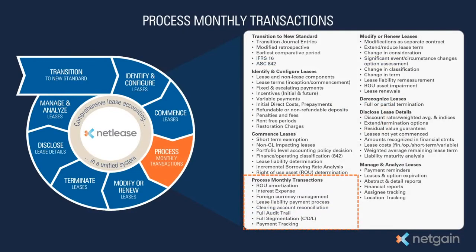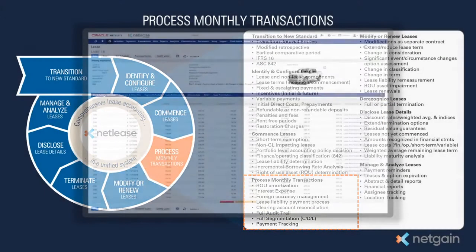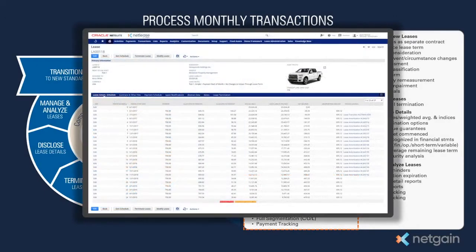NetLease automates the creation of monthly transactions as part of the period-end close process. Journal entries are linked within the amortization table, allowing for easy and transparent review of both the transition entries as well as the month-to-month ongoing journal entries.